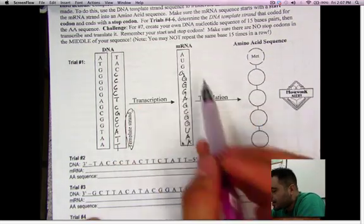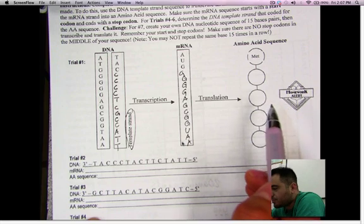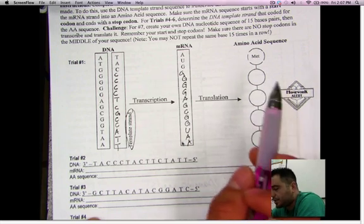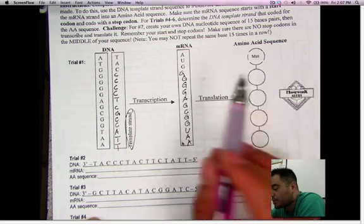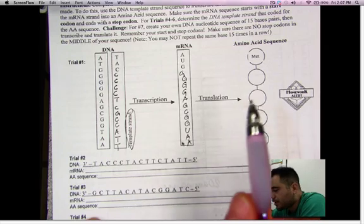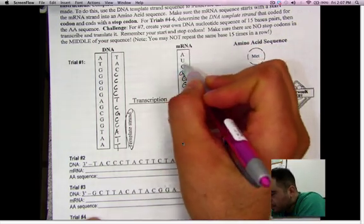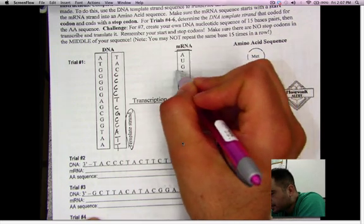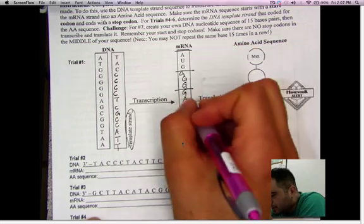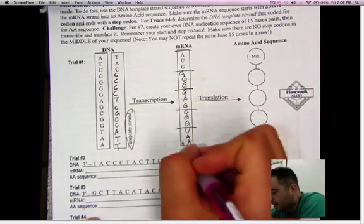And then now we're going to translate that. In other words, we're going to turn that into an amino acid sequence. Remember we start in August. So what I would do right away is find AUG, right there. You see it right away. So I would separate them into codons. Remember codons are every three bases.